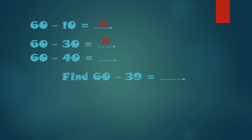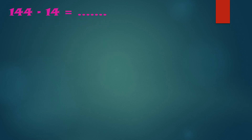60 minus 30 is 30. 60 minus 40 is 20. Now 60 minus 39: we said that 60 minus 40 is 20, so 60 minus 39 will be 21. Yes, superb!